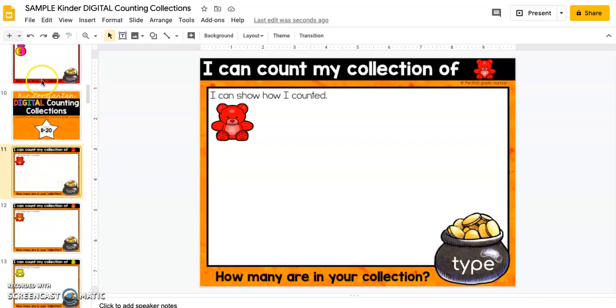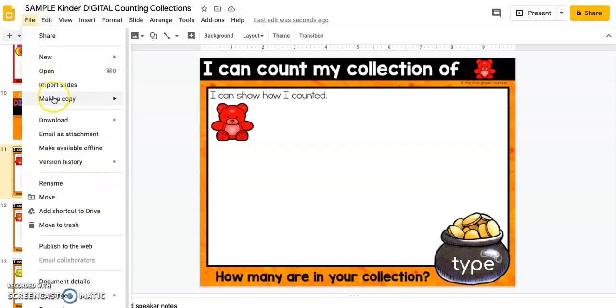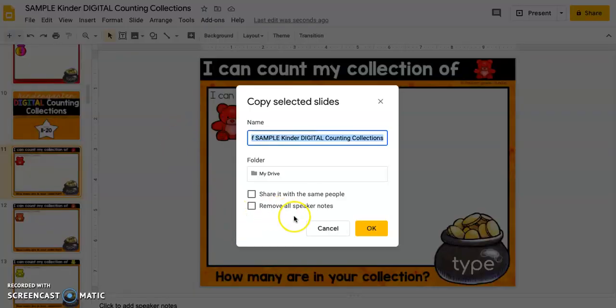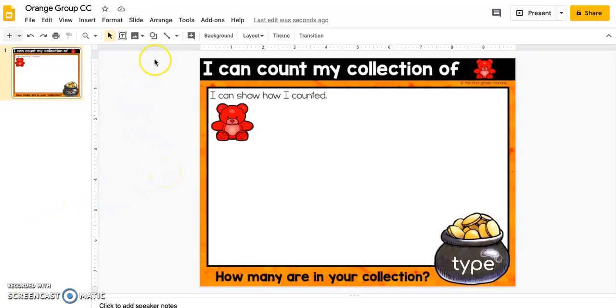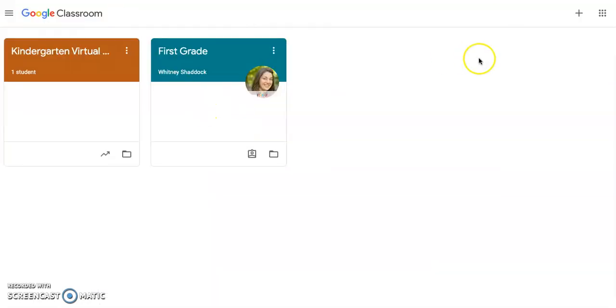So now that I've selected just this slide, I'm going to go to file, make a copy, selected slides. And so I'm going to call this orange group counting collections. And it's going to make a copy of this slide. And once I've made a copy of the slide, then I am ready to assign it in Google Classroom.